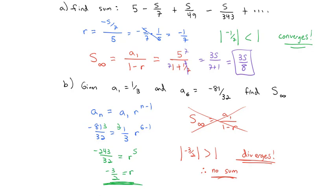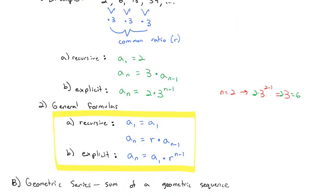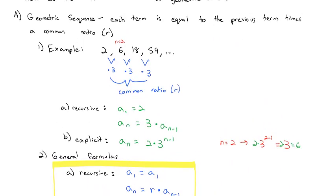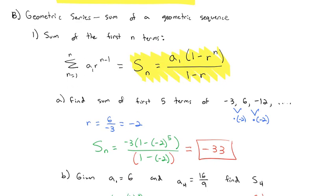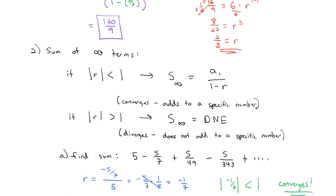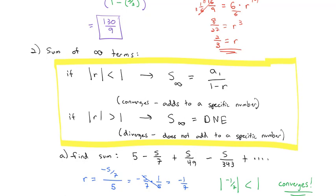That's a quick introduction to geometric series. First, we defined a geometric sequence as each term equal to the previous term times a common ratio. With that, we found a formula for the sum of the first n terms. And if the common ratio is less than 1 in absolute value, we can even find the sum of the infinite terms. Now it's your turn to practice some of these out of the book — try a few and let me know if you have any questions.